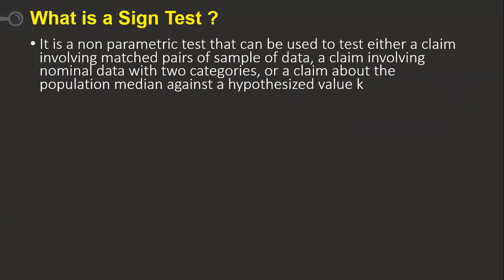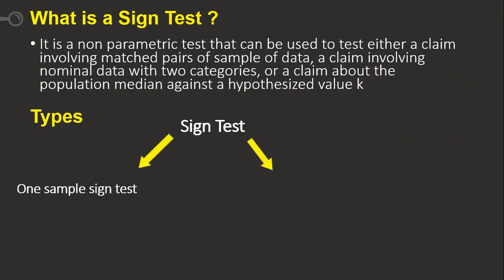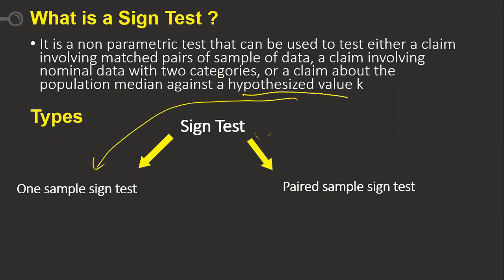What are the two types we are going to have? Mainly, we will be having two types here. The first one is the one-sample sign test, and the other one is the paired-sample sign test. For the one-sample sign test, we are just finding out the hypothesis value. For the paired-sample sign test, it involves a claim with matched paired samples.